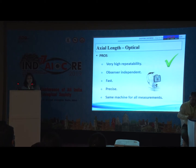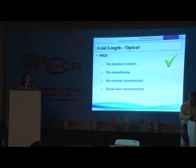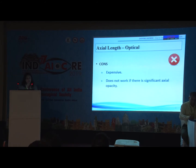Optical biometry is fast, precise, and a single machine can be used for different measurements at the same time. There is no physical contact, no anesthesia, no corneal compression, and visual axis measurement is obtained. However, it is expensive and does not work if there is significant posterior subcapsular cataract.